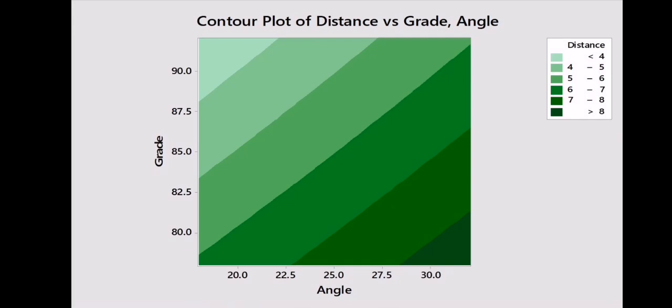Looking at this contour plot, we see a number of things. Number one, greater distances can be achieved here with lighter paper and with larger angles from among the grades of paper and the angle sizes that we have explored. Secondly, we notice the contours are roughly parallel, and this indicates that the response surface is a plane, as opposed to something like a ridge or a trough or a peak or a valley or a saddle.